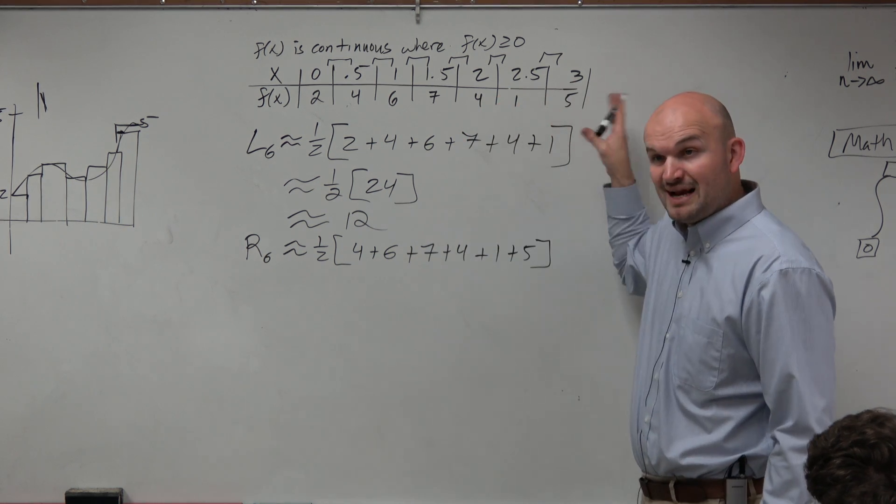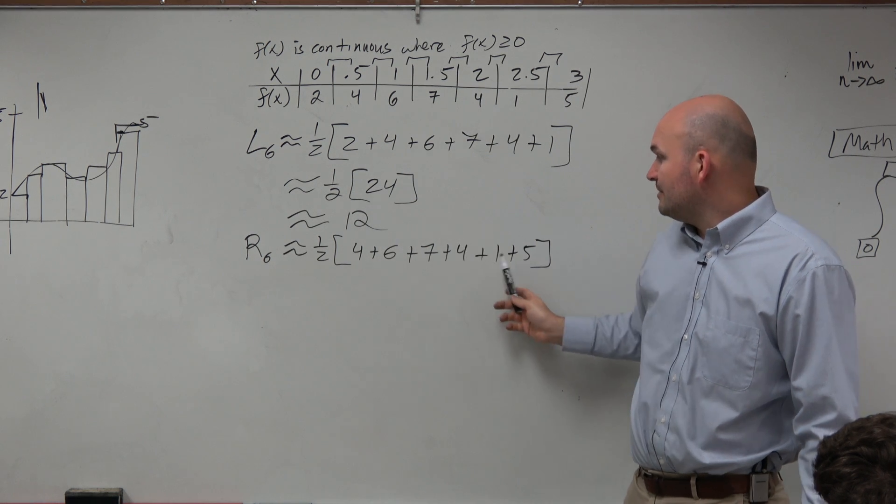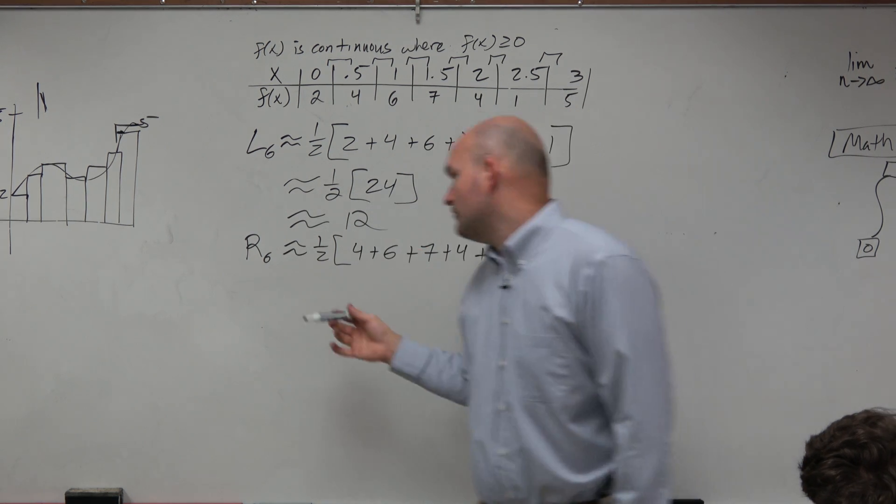So you could start at 5, the right end point, and work your way backwards. And just remember, if there's six intervals, we've got to make sure that we have six intervals. But now we've shown our method.